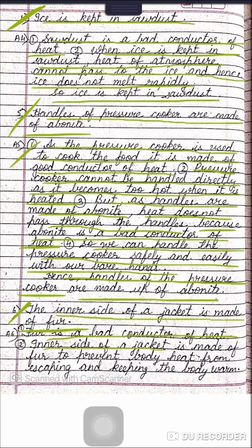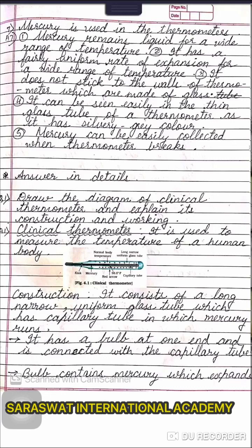Question number six: the inner side of the jacket is made of fur. Fur is a bad conductor of heat. The inner side of the jacket is made of fur to prevent body heat from escaping and to keep the body warm.